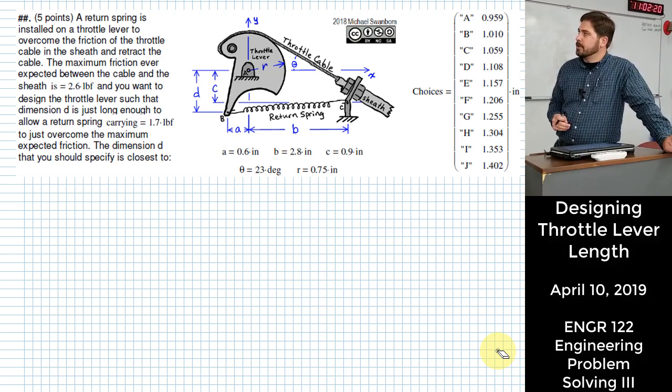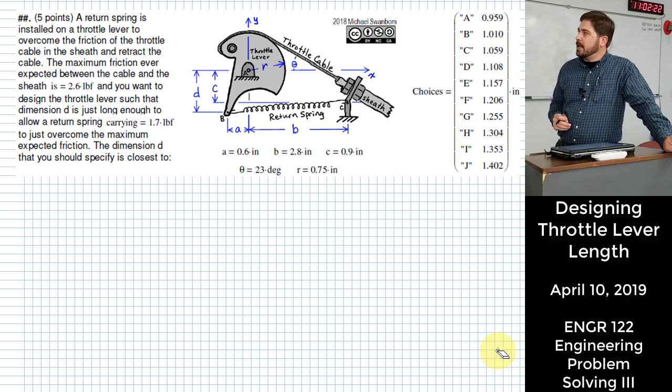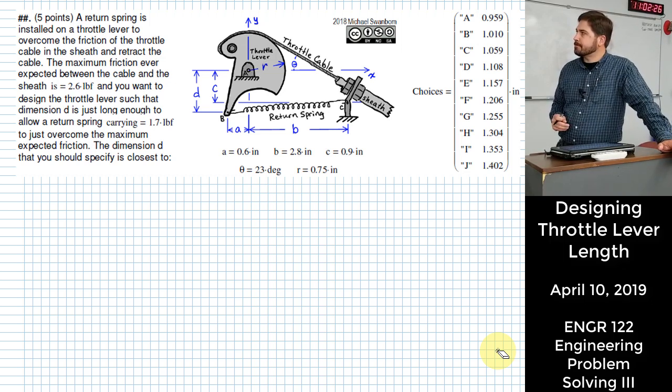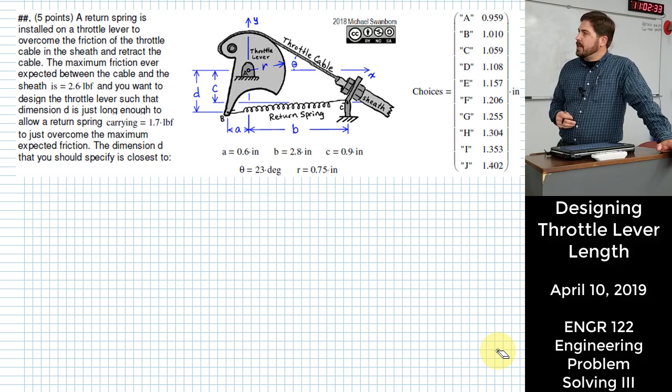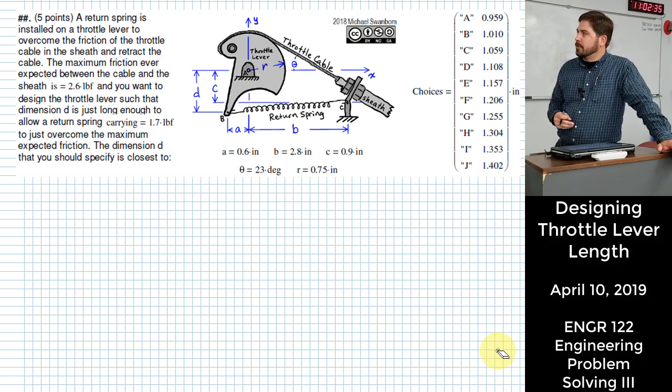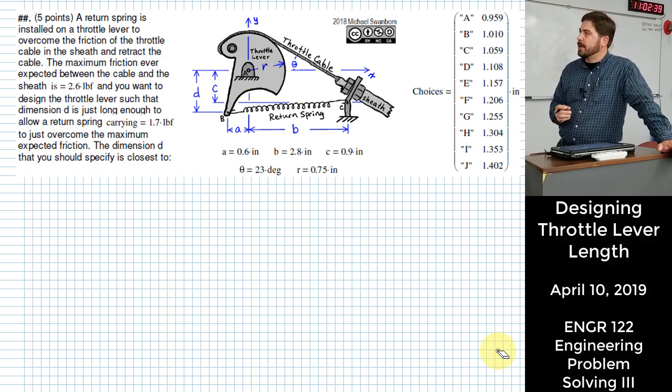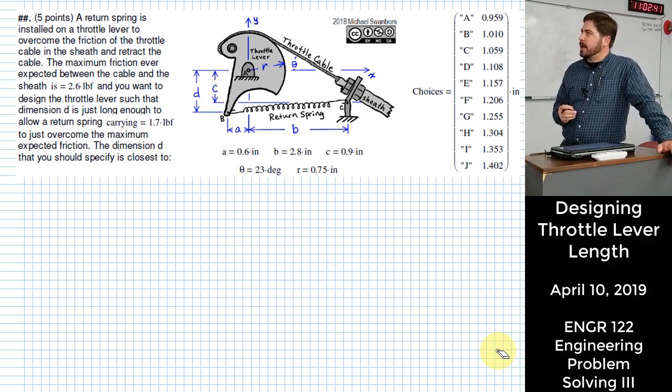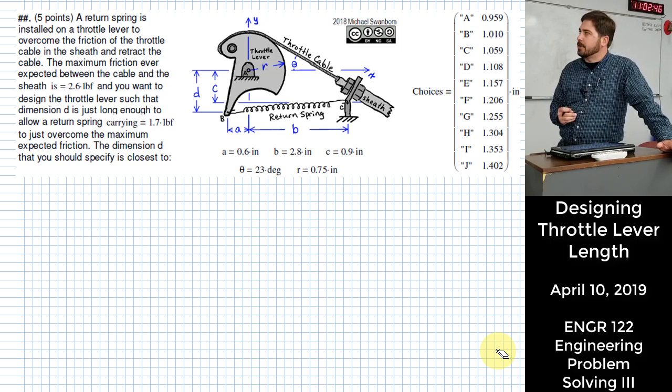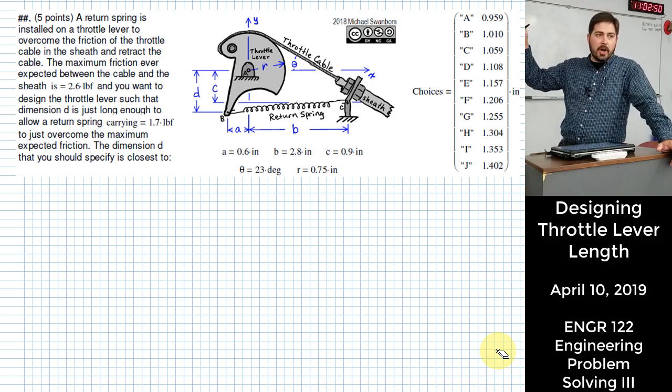What you want to do is design this return spring on your throttle lever so that it can still return the throttle lever back to its original position when it has to pull against that frictional force in the throttle cable. But you don't actually have the ability to control the amount of force in the spring. Instead you're trying to figure out how to do this just by changing one dimension on this throttle lever and that dimension is marked as dimension D on the figure.